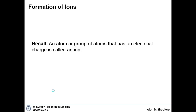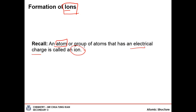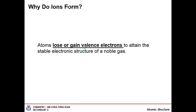What is an ion? An atom is electrically neutral — the smallest particle having the same chemical properties as the element. An ion is an atom or group of atoms that has an electrical charge. The ion can be either positively charged or negatively charged. Ions are formed by the loss or gain of valence electrons to attain the stable electronic configuration of a noble gas.